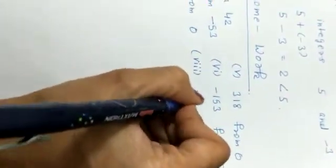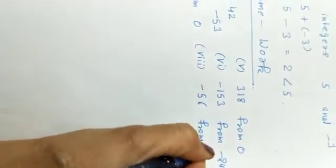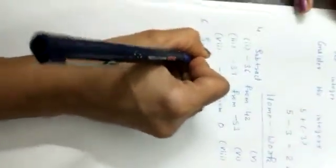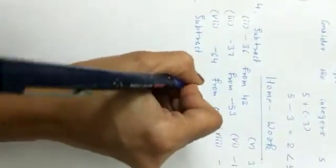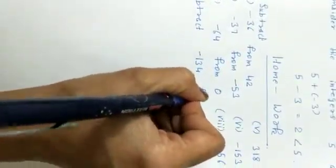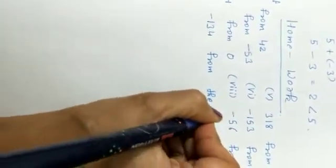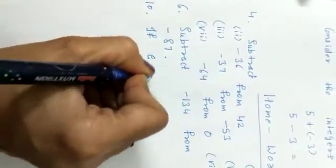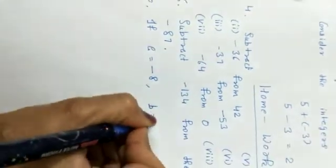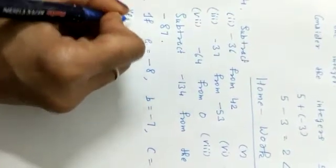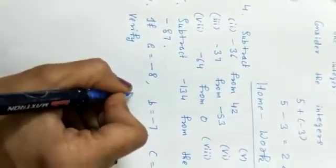If you are not maintaining a separate notebook for each subject, you can follow one notebook. Take care of signs when subtracting — if you note the wrong sign, the whole sum will be wrong. Subtract -134 from the sum of 38 and -87. Next, given integers a = -8, b = -7, c = 6, verify the associative property.